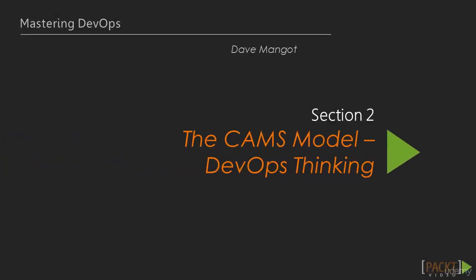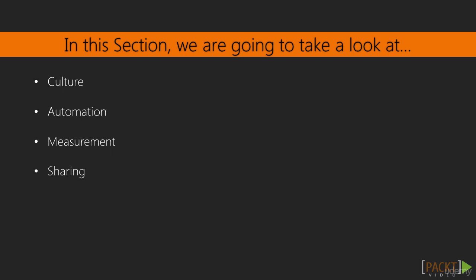Hi, welcome back. In this section we're going to talk about the CAMS model, another vector for looking at DevOps. In the first section we talked about the three ways, and the three ways were more about the goals of DevOps, the things that we were trying to set up. The CAMS model is a lot more about the ways of DevOps, the things that we do.